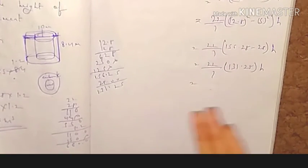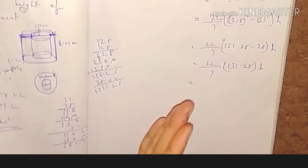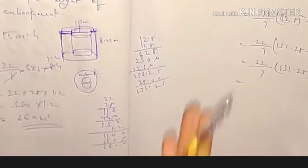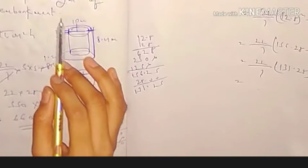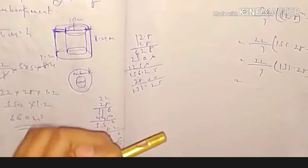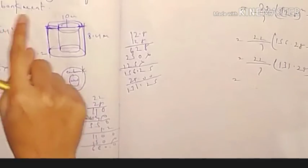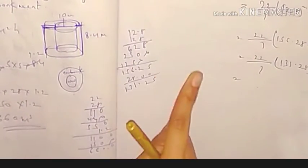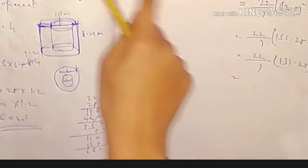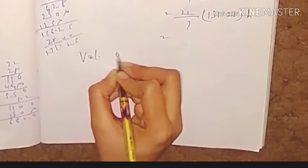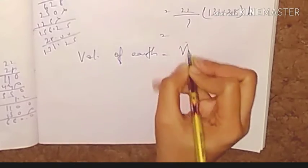As I explained in a previous video with question number 20, when you have two shapes and you need to find the height, you equate their volumes. So volume of earth equals volume of embankment. We put the volume of earth equal to the volume of embankment formula directly.